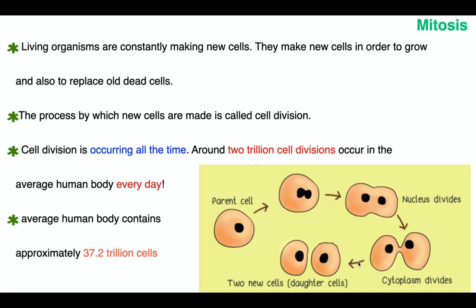Mitosis: living organisms are constantly making new cells. Why? Because in living organisms, cells are always dying and they must be replaced. So cell division is occurring all the time in our body, in plant bodies, and in many other places. For example, in the human body, 2 trillion cell divisions occur every day.